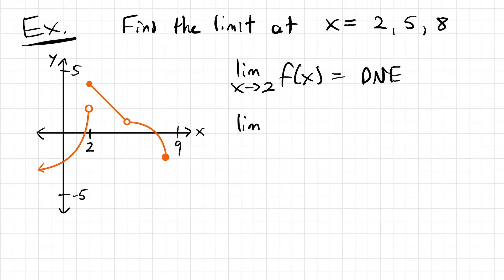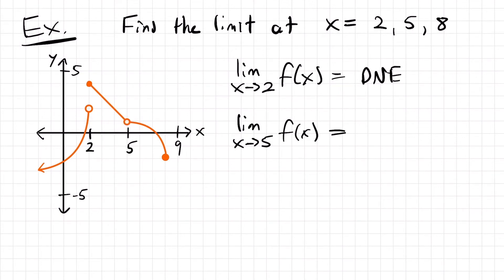If we look at the limit as x approaches 5 for the function, we might have a different result. Let's identify where 5 is on the graph. Starting from the right side, we are led to a spot where we are getting close to y equals 1. And from the left side, we are also being led to y equals 1. Both sides agree — we have 1 from the right and 1 from the left — so the limit as x approaches 5 from both sides is also 1.